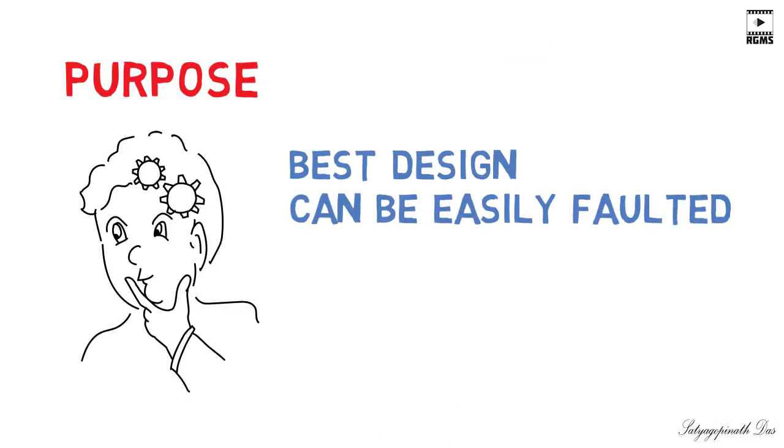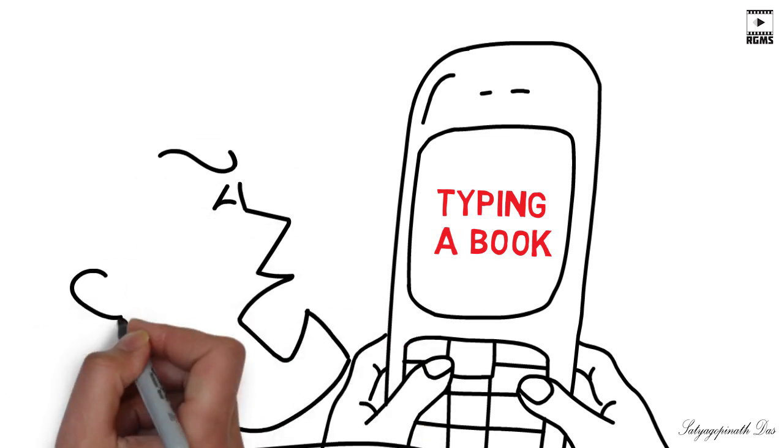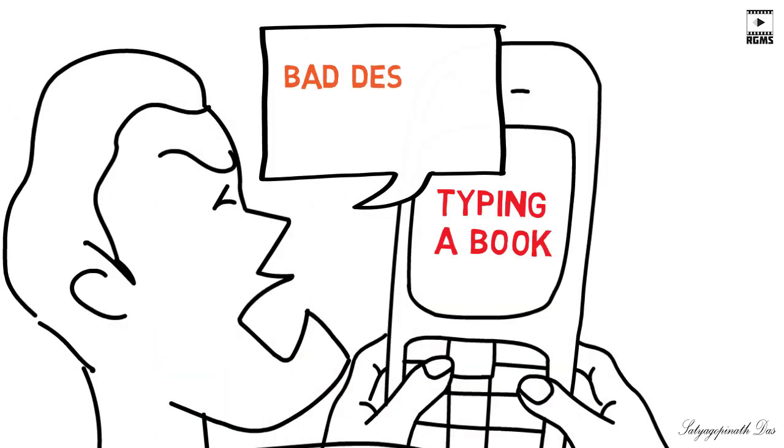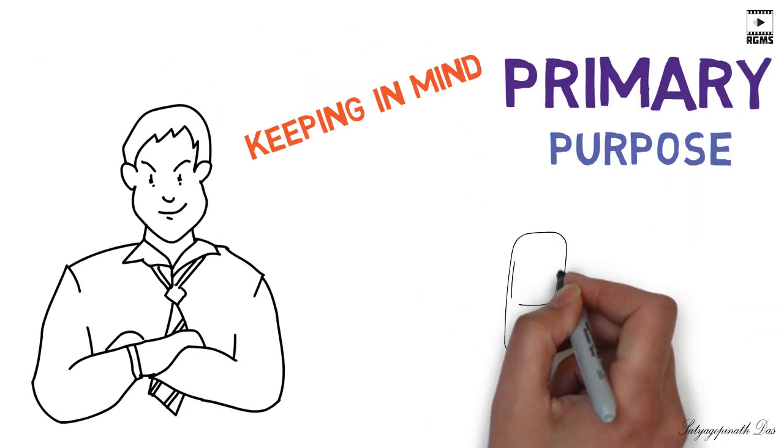For example, if you use a cell phone's message typing keypad for typing a book, we will naturally feel justified in criticizing the cell phone design and the designer. But a well-informed person will remind us that the cell phone's design should be evaluated keeping in mind its primary purpose, which is to serve as a portable audio-visual communication device.